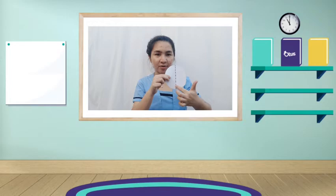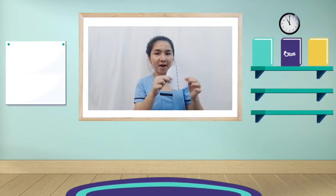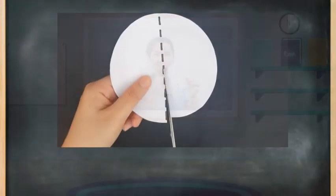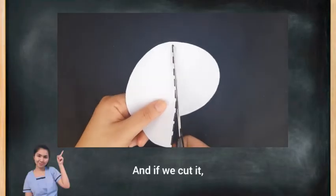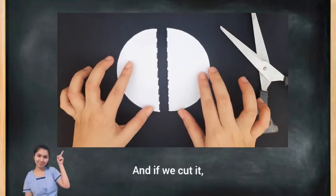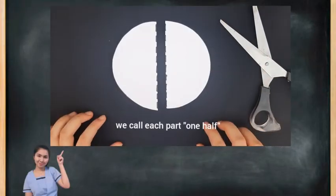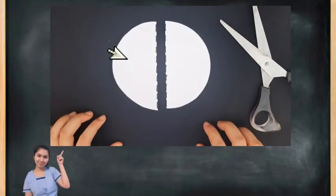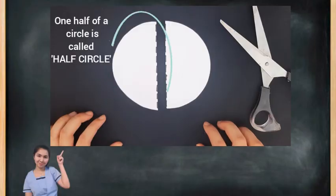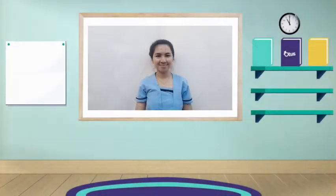And if you notice, there's a dotted line at the center. The line divides the circle equally. And if we cut it, we call each part one-half. And one-half of a circle is called a half-circle.